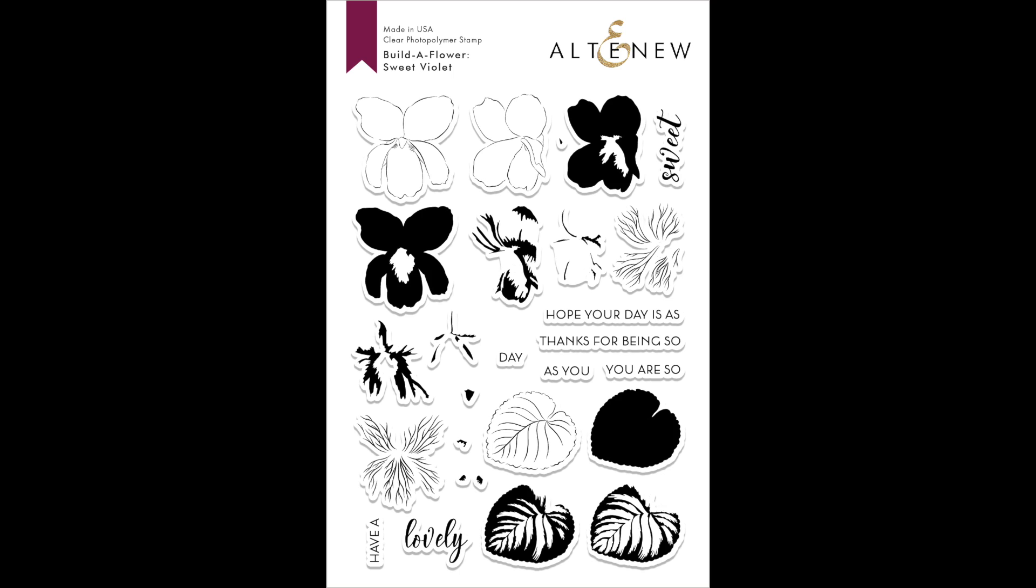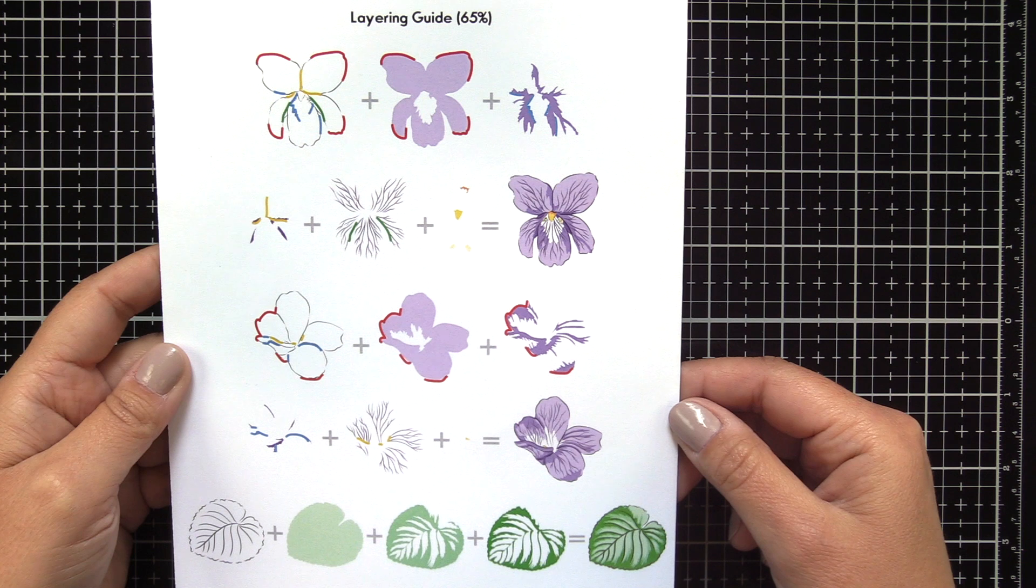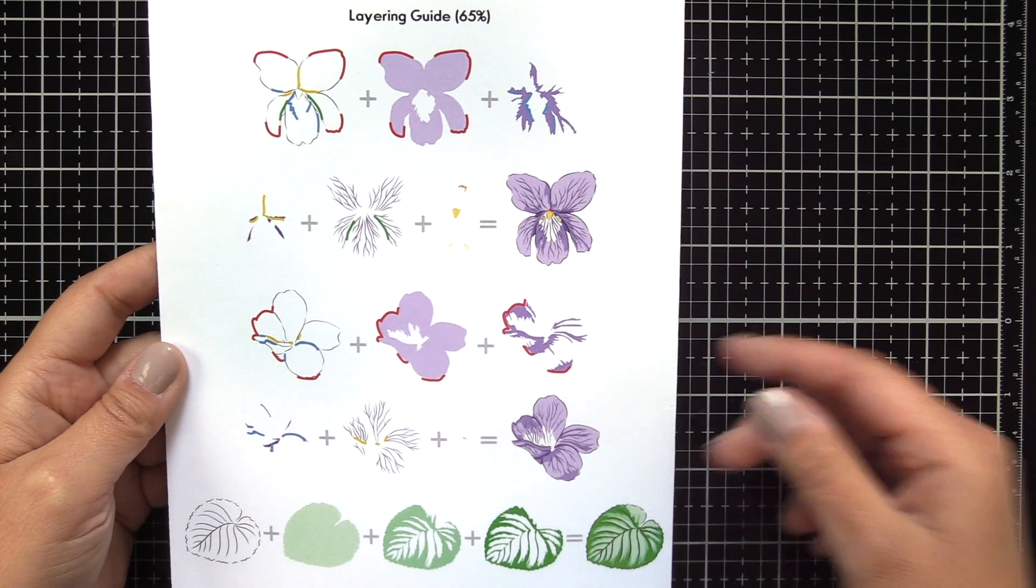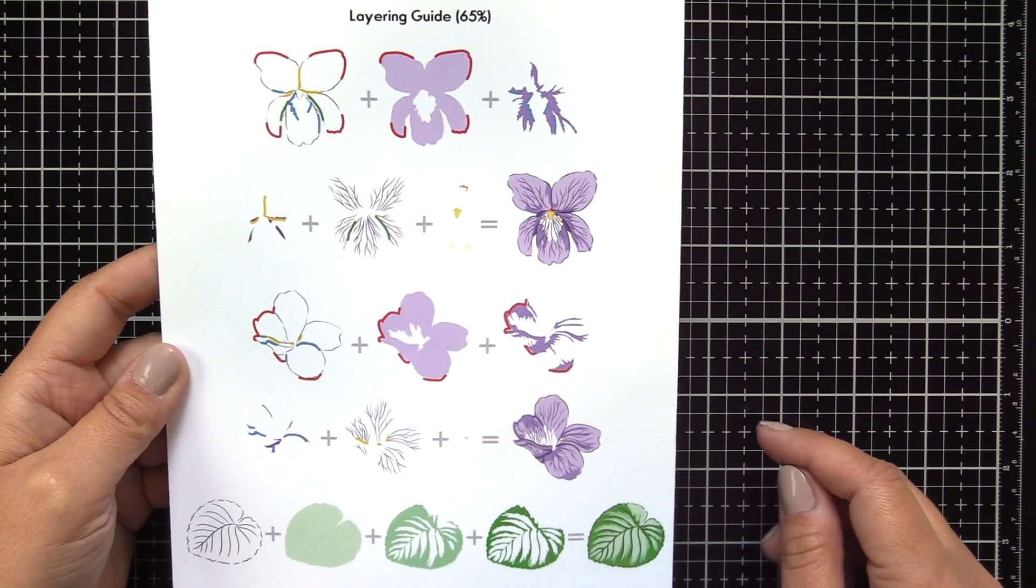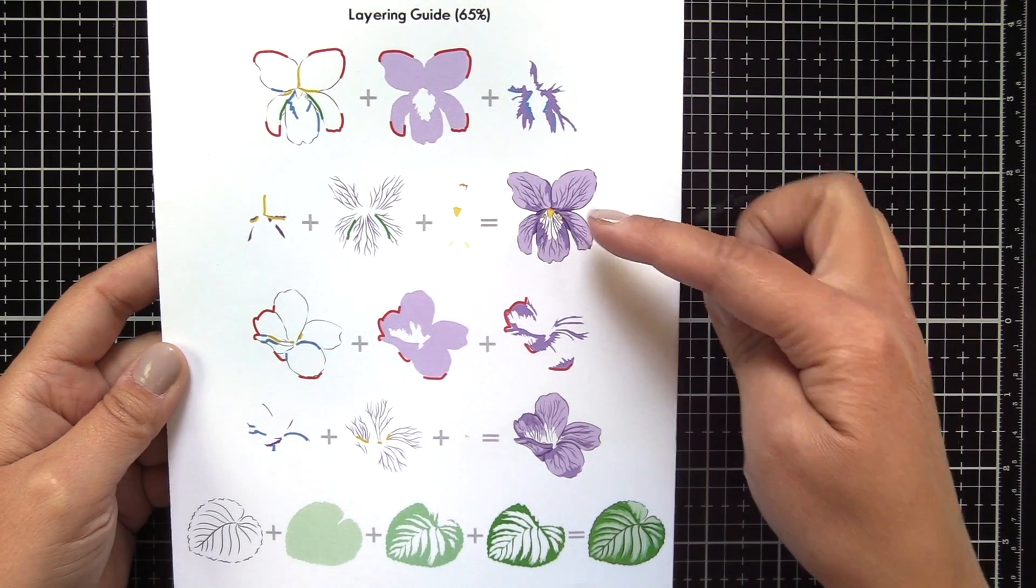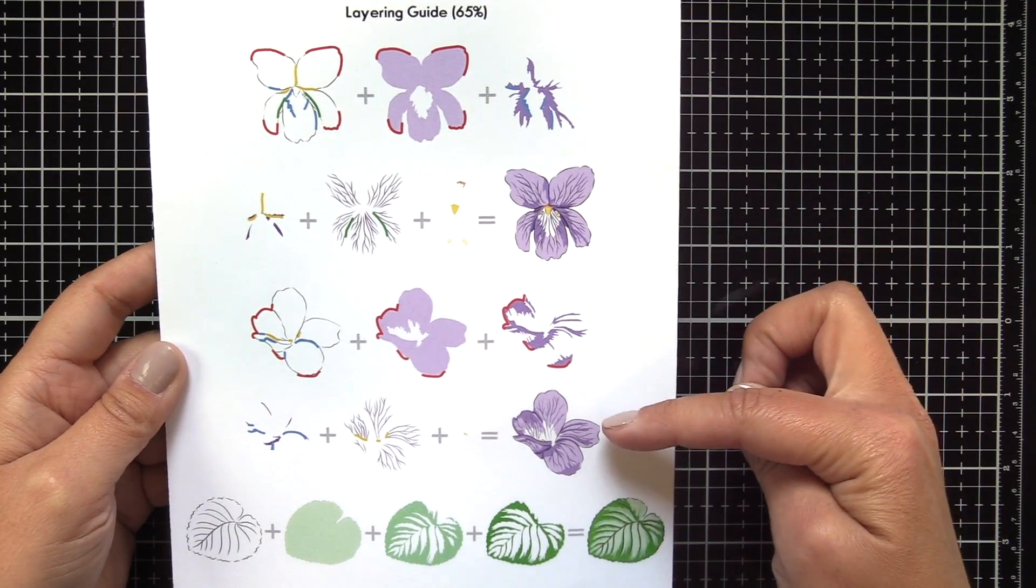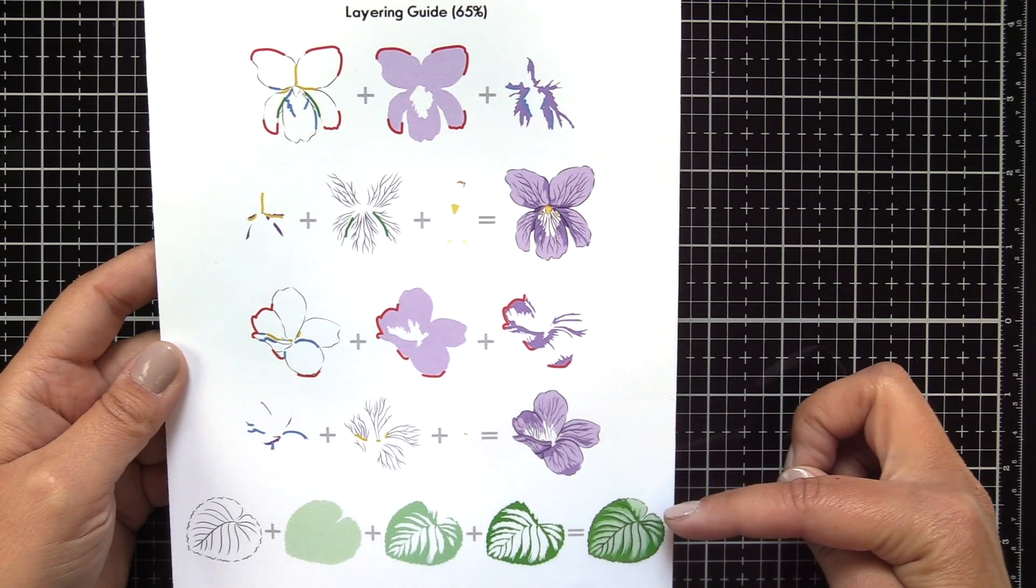In this video, I'm going to walk you through how you can layer images from the Build-A-Flower Sweet Violet Stamp Set. This offers two beautifully layered blooms and one large leaf. Also included are eight sentiments for everyday cards or someone special.